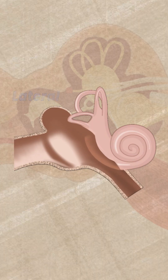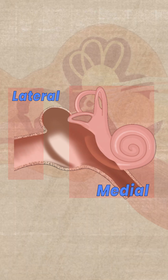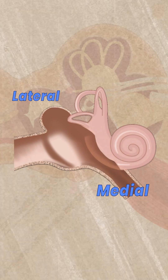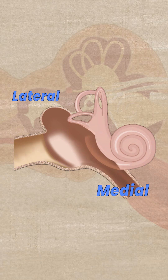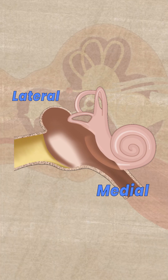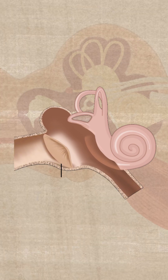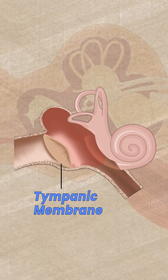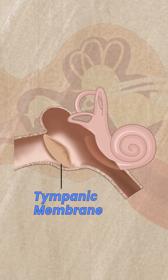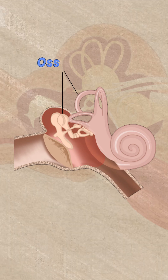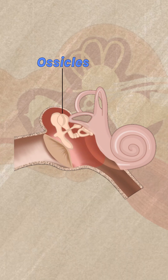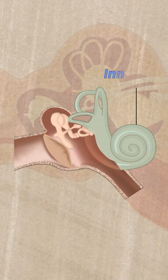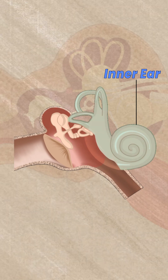When we talk about the anatomy of the middle ear, we will start first from the lateral most part to the medial most part. The lateral part we have got the external auditory canal, which is separated from the middle ear by the tympanic membrane. The middle ear also contains the ossicles, and the medial wall of the middle ear is separated from the inner ear by the medial wall.